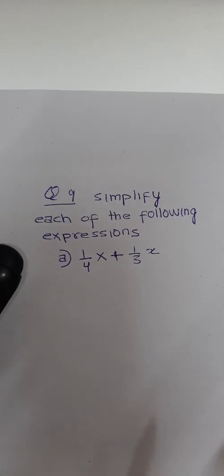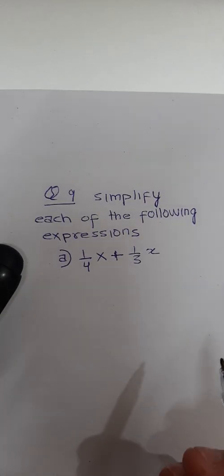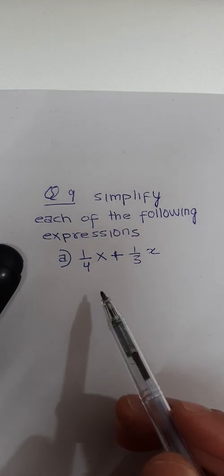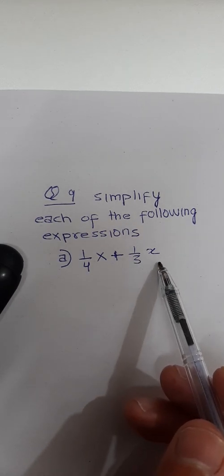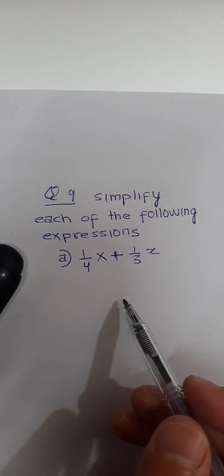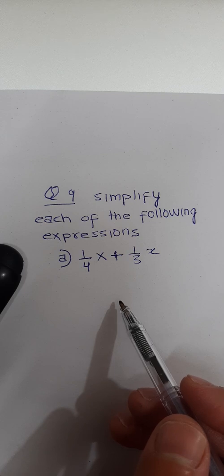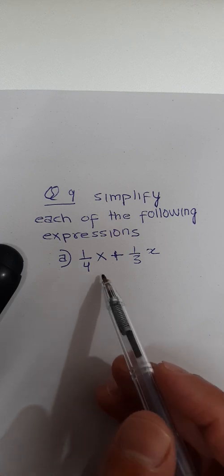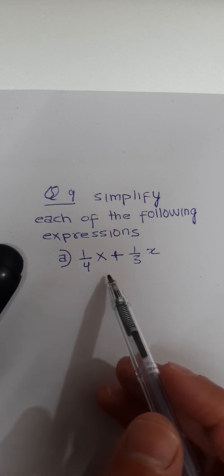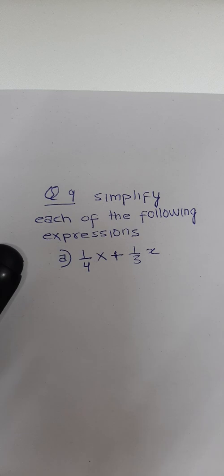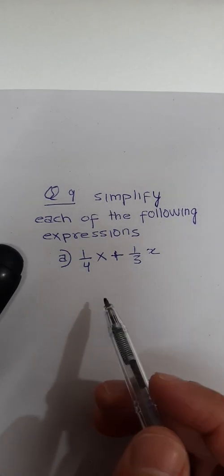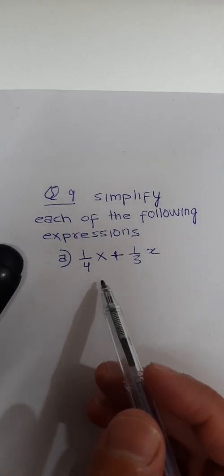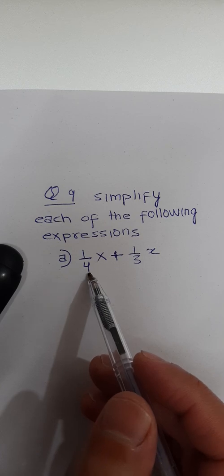Question number 9: simplify each of the following expressions. Part a is 1 over 4x plus 1 over 3x. You have to take the LCM to simplify this. In order to take the LCM, you can make the denominators the same — here the denominator is 4, here it is 3.